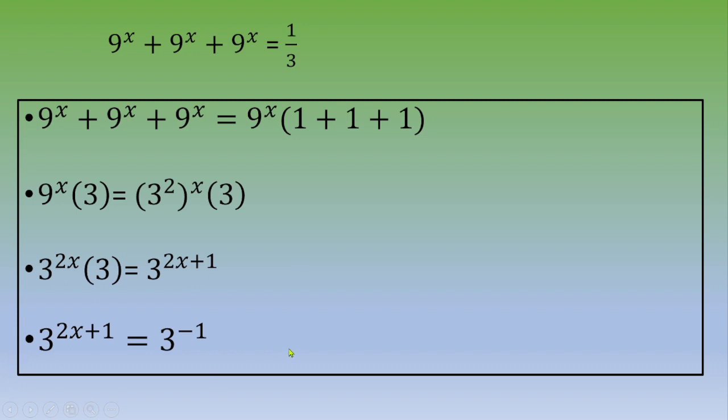Now we've got two terms and the base is the same, so the powers are the same as well. We can solve this equation: 2x + 1 = -1. If you put this one on the other side of the equation, 2x = -2, so x = -1. That's the solution.